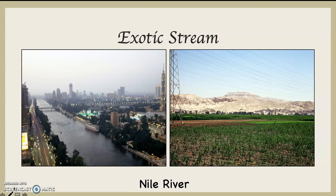A few other examples of exotic streams: the Indus River in Pakistan is an exotic stream, as are the Tigris and the Euphrates, the two famous rivers of Mesopotamia that flow through Iraq.